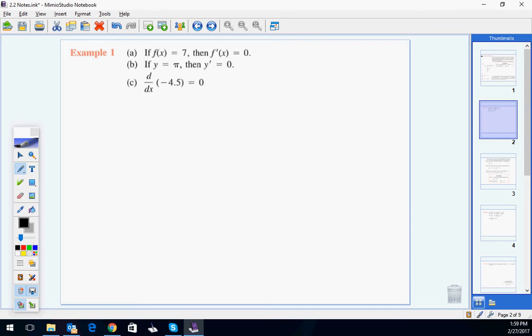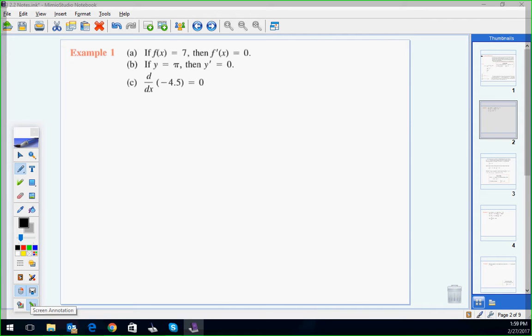So if f of x is seven, f prime of x is zero. If y is pi, y prime is zero. The derivative of negative 4.5 is zero. This is just examples of what they're talking about. These are all notations. This is original. This is derivative. Derivative equals zero. D over dx means derivative with respect to x. Any questions with that? Remember, a constant's a number without a variable, so it's not changing. So 4 is always 4, but 4x changes because of the x. So if f of x is the constant number, it's always zero. The derivative of it will be zero. The derivative of the constant is always zero.